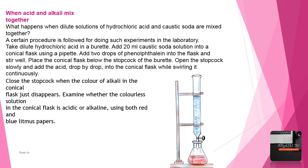Add two drops of phenolphthalein into the flask and stir well. Place the conical flask below the stopcock of the burette. Open the stopcock slowly and add the acid drop by drop into the conical flask while swirling it continuously. Close the stopcock when the color of alkali in the conical flask just disappears. Examine whether the colorless solution in the conical flask is acidic or alkaline using both red and blue litmus papers.